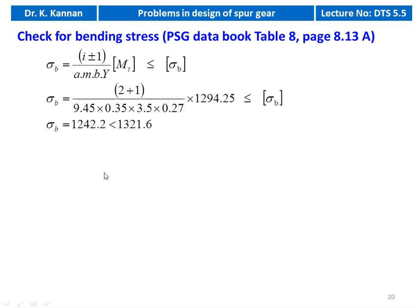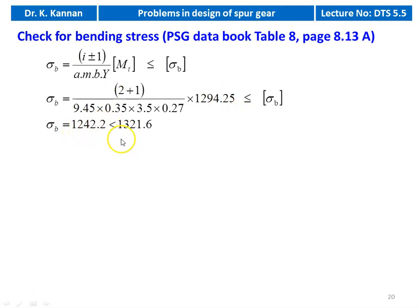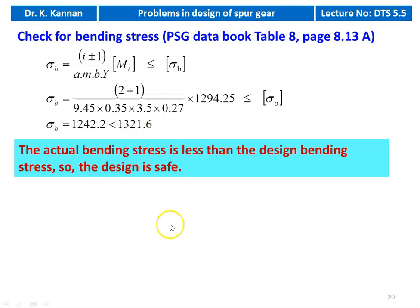Check for bending stress: σb = (i + 1) / (A × m × B × Y) × [MT] = (2 + 1) / (9.45 × 0.35 × 3.5 × 0.27) × 1,294.25 = 1,242.2 kgf/cm², which is less than design bending stress of 1,321.6 kgf/cm². Design is safe. Both checks are satisfied; no need to check for plastic deformation.